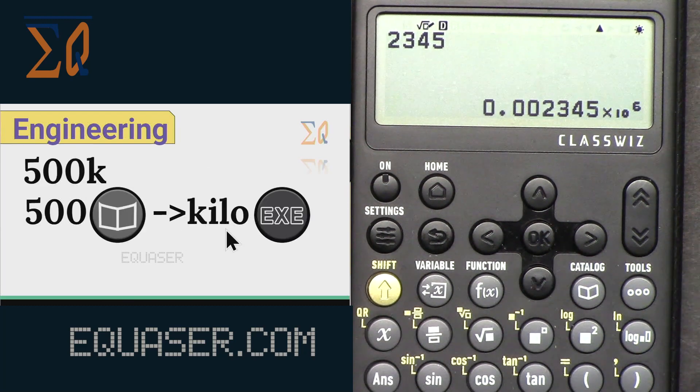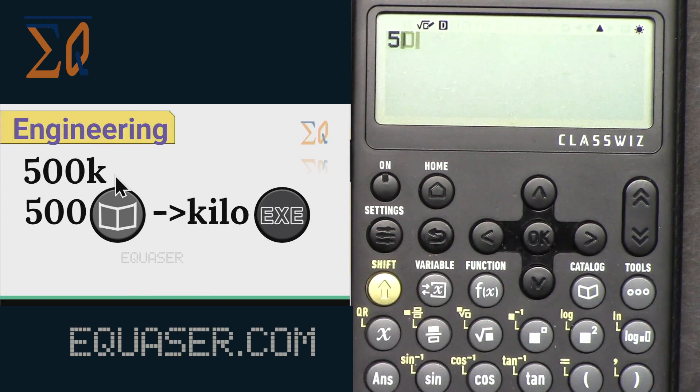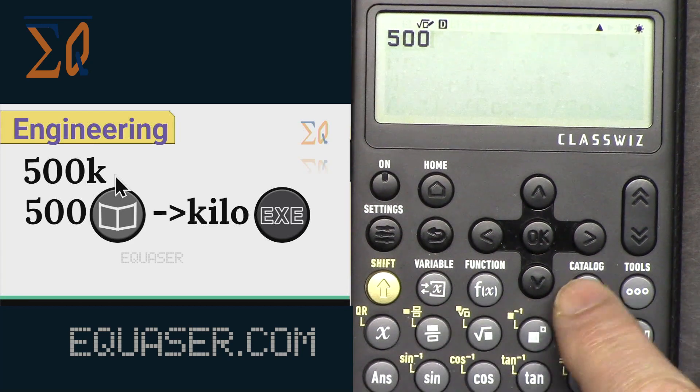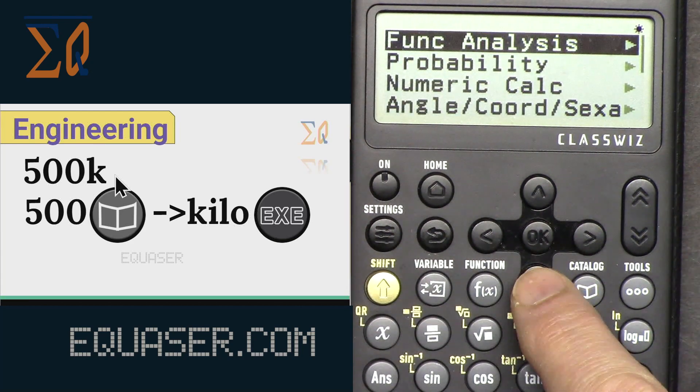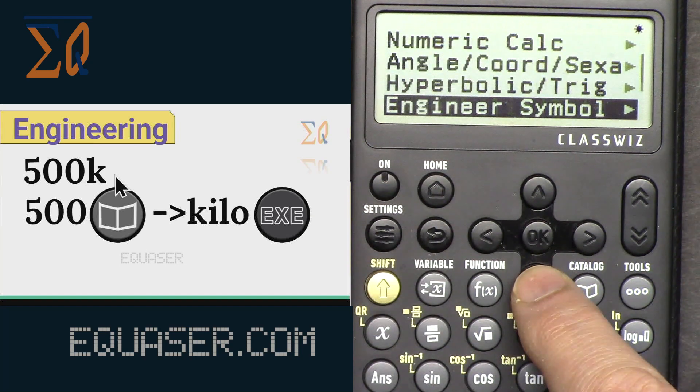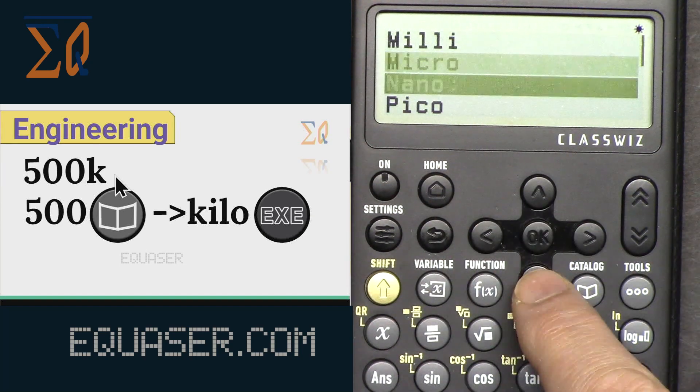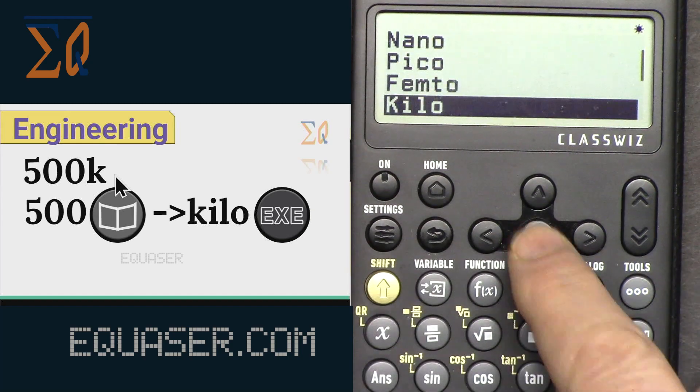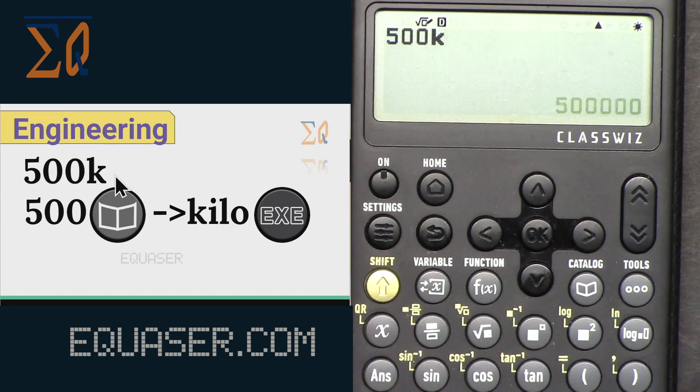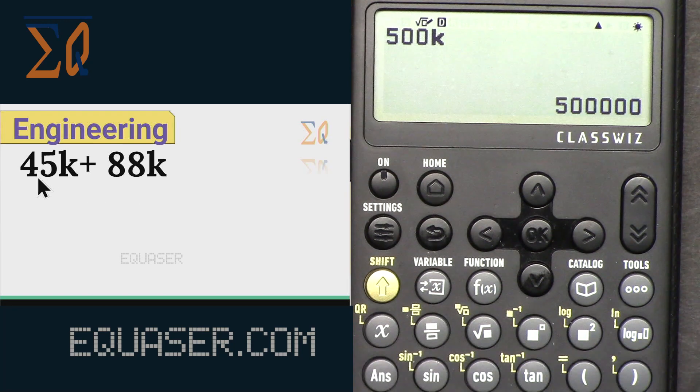So let's see how can we write 500 kilo. Now I'm pressing all clear, 500, and then catalog, and then go engineering, engineering sample, and then kilo. That is 500 kilo. And then you can add, for example, 45 kilo plus 88 kilo. So all clear, 45, catalog, engineering, and then kilo, plus 88 kilo.